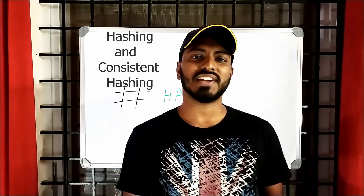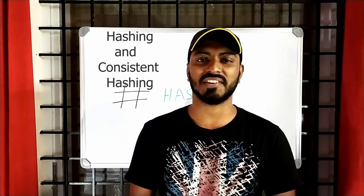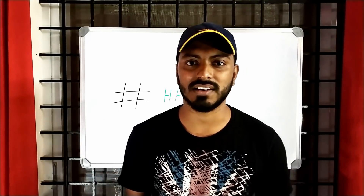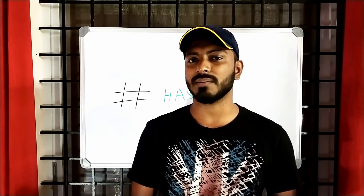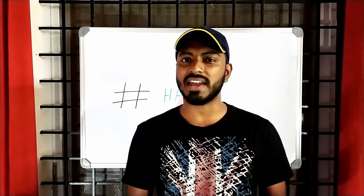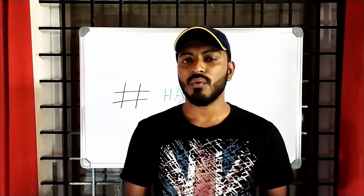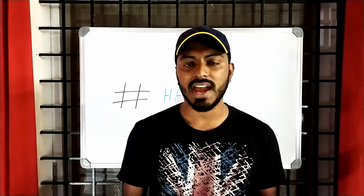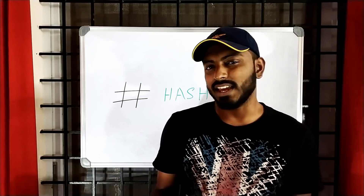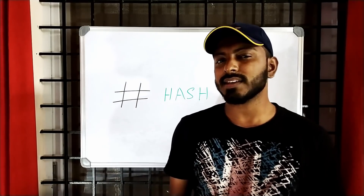Hi everyone, my name is Naren and in this session I'm going to talk about hashing and consistent hashing. Oftentimes while we are coding we need to save an item and retrieve it as fast as possible. The real question is how to speed up searching of an item. Consider a case where I have given you a list of items and you need to search whether an item is present or not. If the list is sorted then it is much easier — all you need to do is use binary search algorithm. What if the list is not sorted? In this case the only option is to go through each and every item in the list.